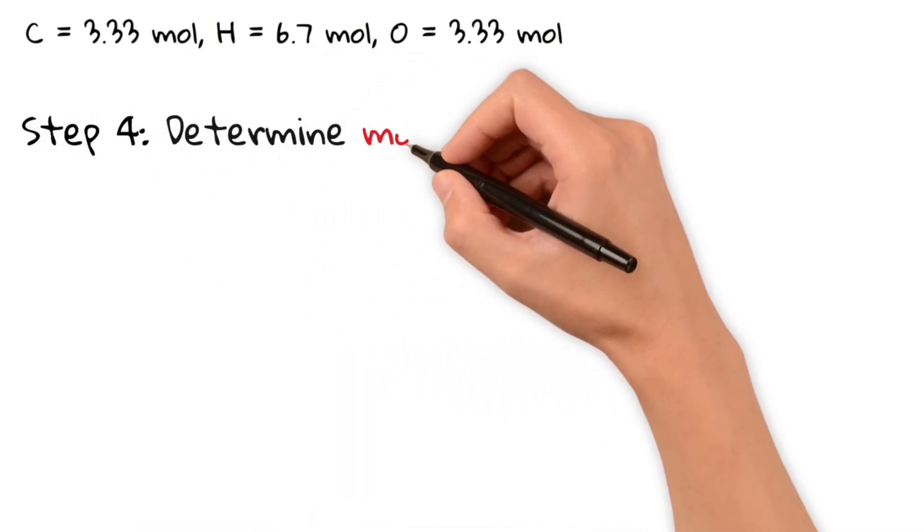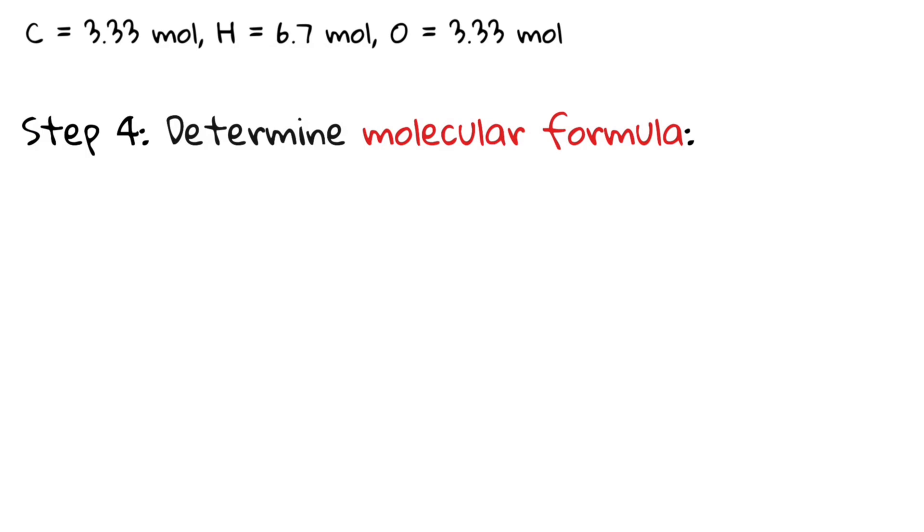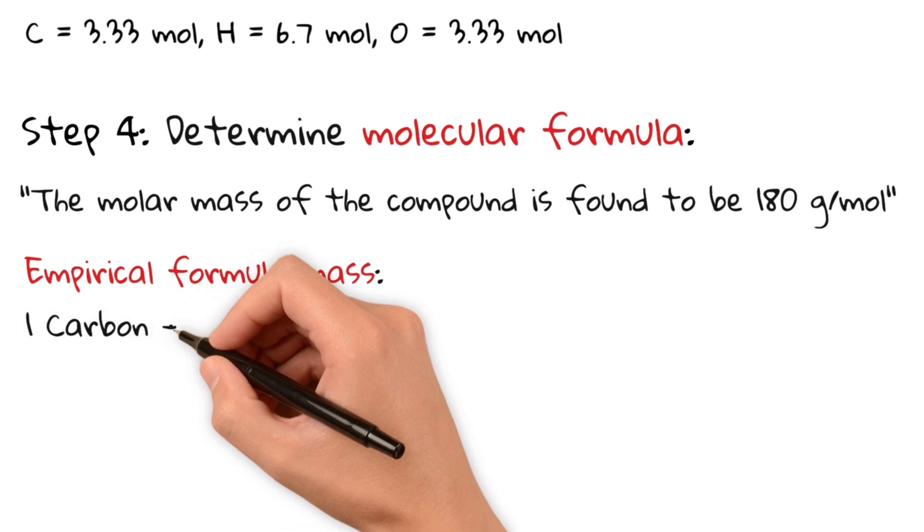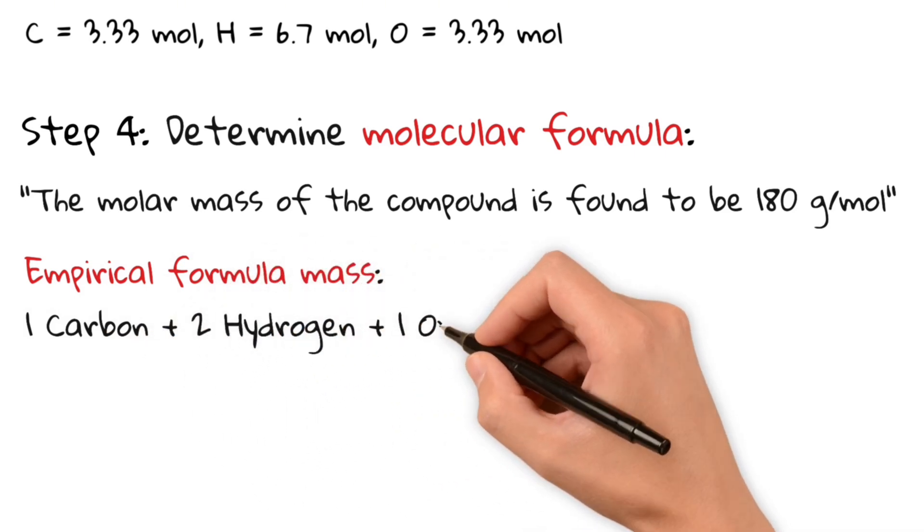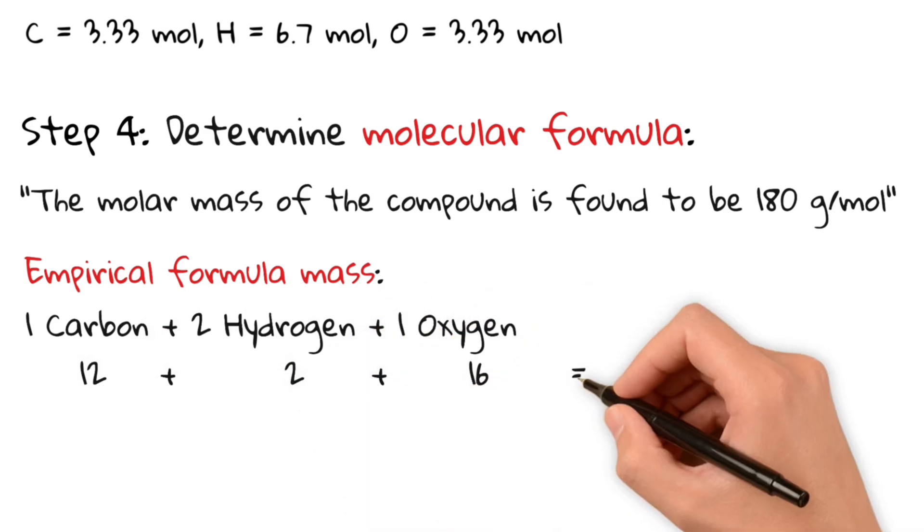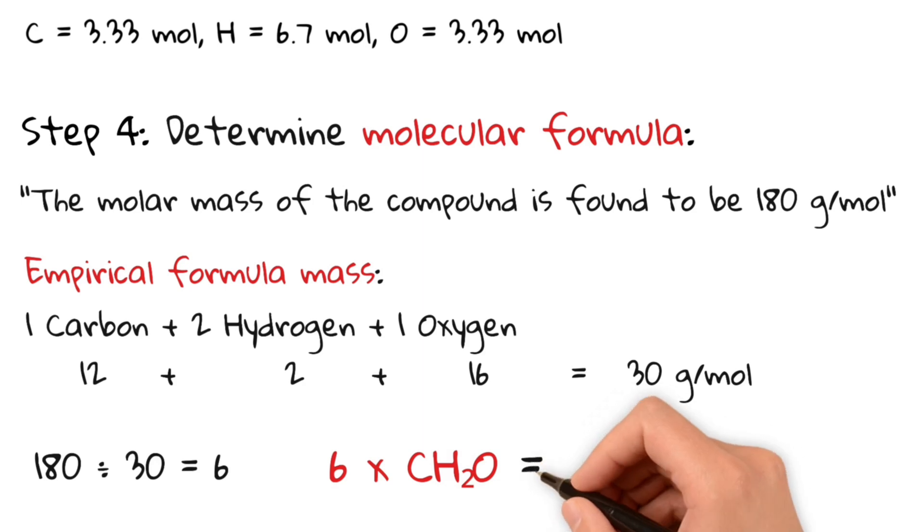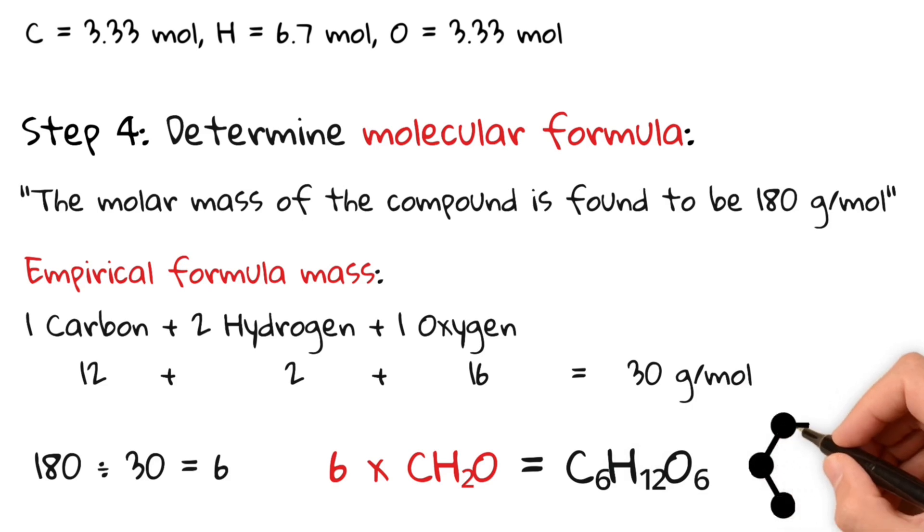Now, to determine the molecular formula, you're given the molar mass of the compound. The molar mass is 180 grams per mole. Now, we first check the mass of our empirical formula. We have one carbon, 12, plus two hydrogen, 2, plus one oxygen, 16, equals 30 gram per mole. Now, we simply divide the molar mass by the empirical formula mass. 180 divided by 30 equals 6. This tells us that if we multiply our empirical formula by 6, we get the molar mass of 180. So, therefore, our molecular formula is C6H12O6. That's glucose.